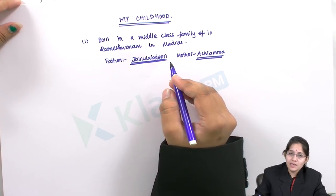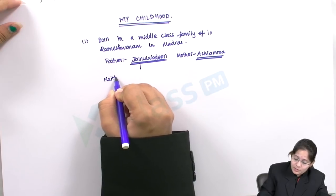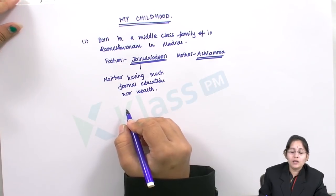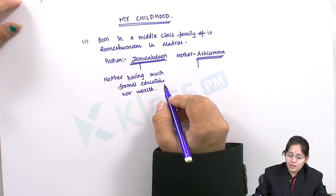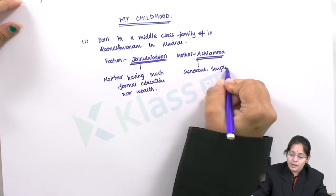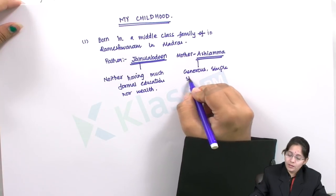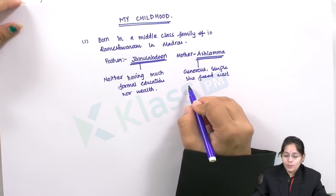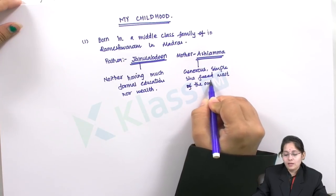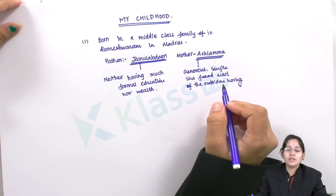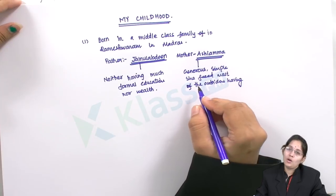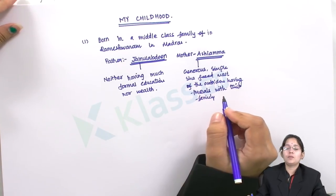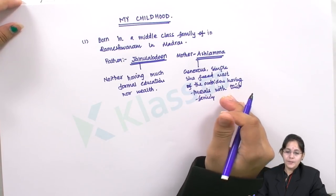Dr. A.P.J. Abdul Kalam says that his father possessed neither much formal education nor wealth. He also adds that his mother Ashyamma was generous and simple, and through her generosity and simplicity she used to feed most of the people. Along with family members, most of the outsiders used to have food with them — indicating how generous and concerned his mother was towards the society.